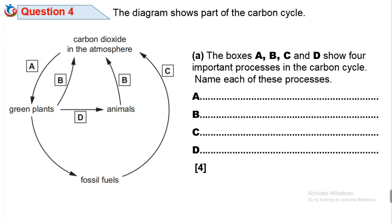Question 4. The diagram shows part of the carbon cycle. The boxes A, B, C and D show four important processes in the carbon cycle. Name each of these processes from the diagram.